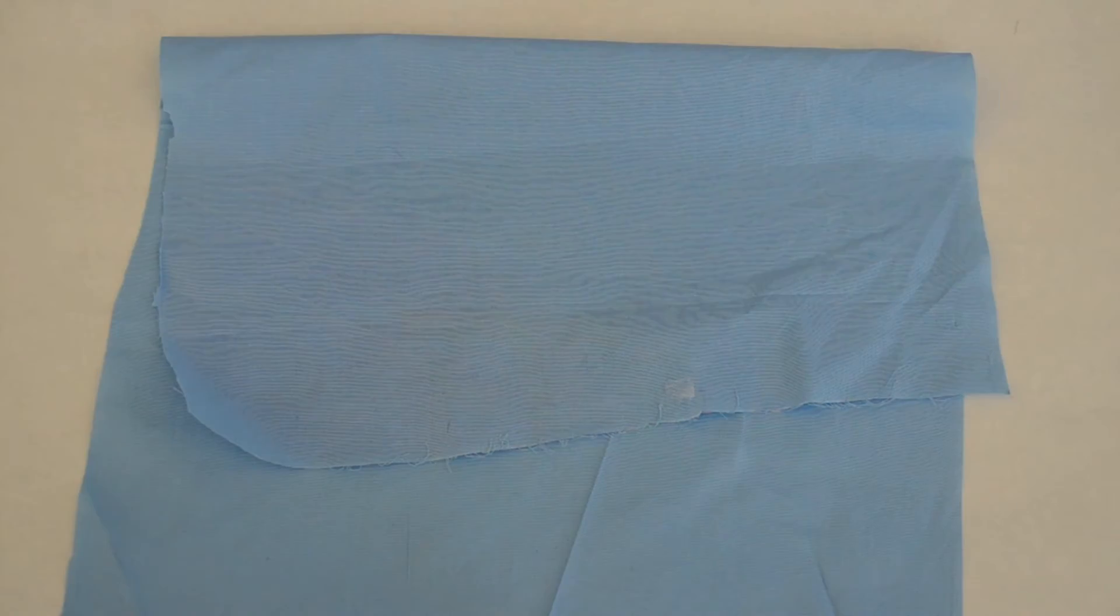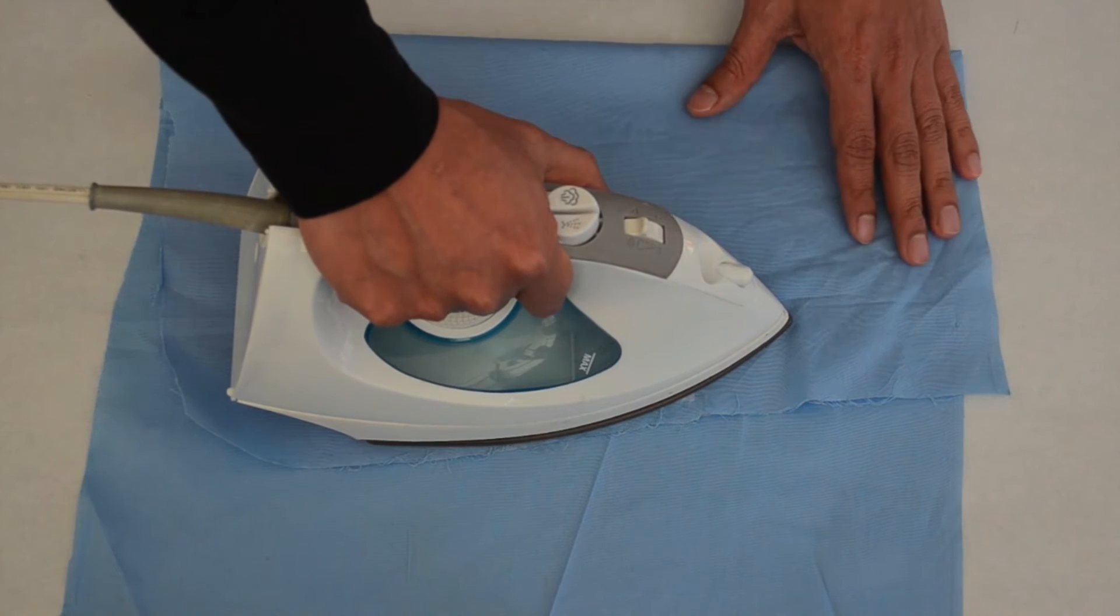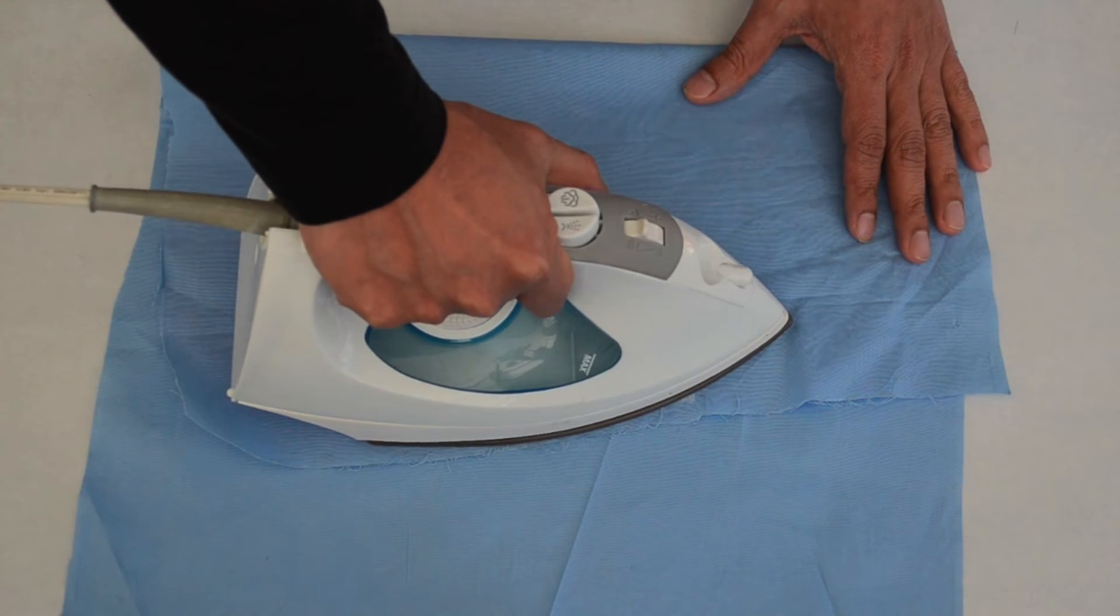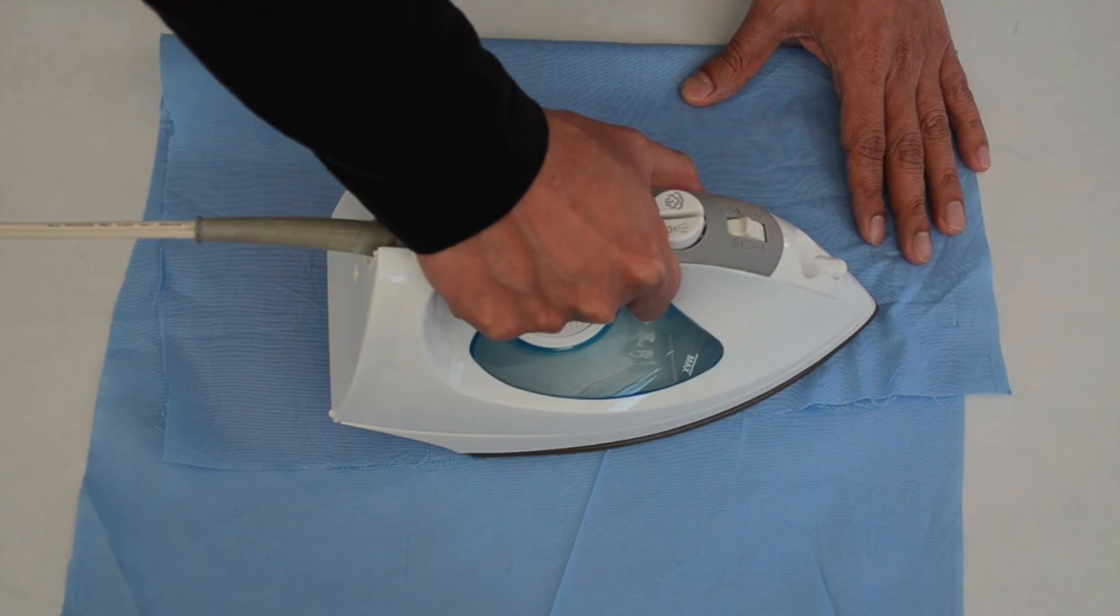Once again, cover the fabric and textiles with a piece of cloth and iron over it for a few seconds until the textiles are attached to the fabric. This combination will serve as the sensor's base.